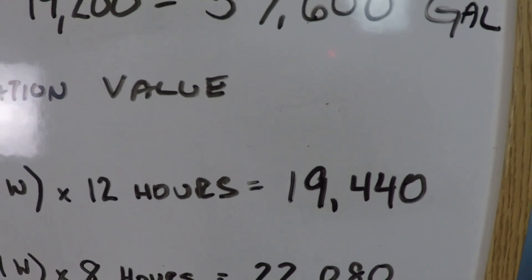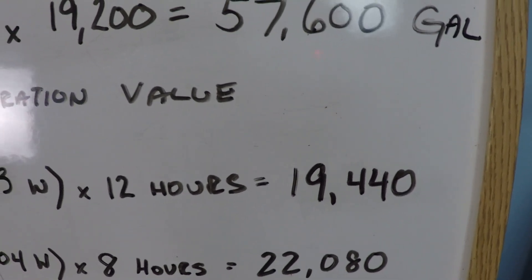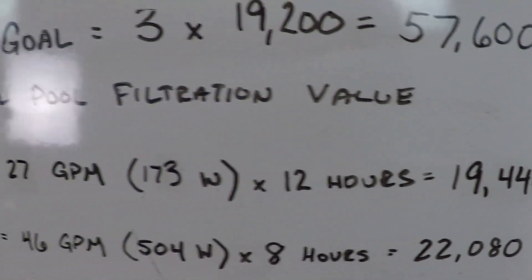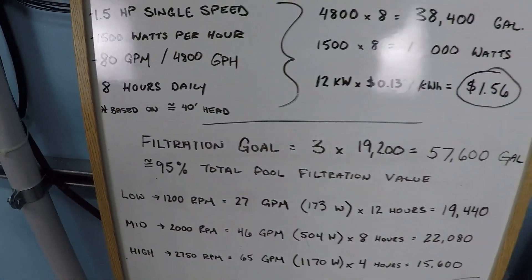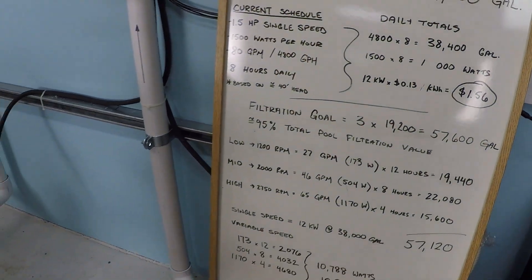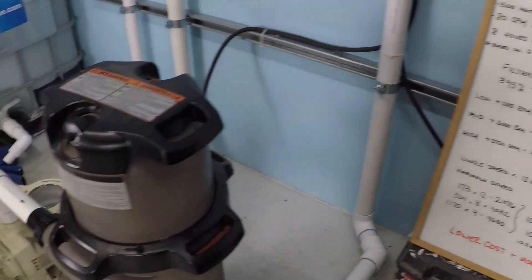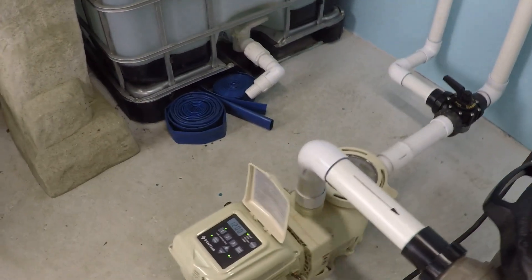12 hours of operation on this very low amount of power and RPM still results in 19,440 gallons of water that's filtered. It's a pretty impressive amount of water that you can filter over a long period of time, and it uses a tiny amount of power in doing so.